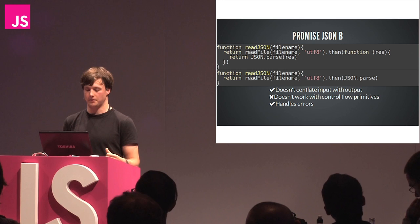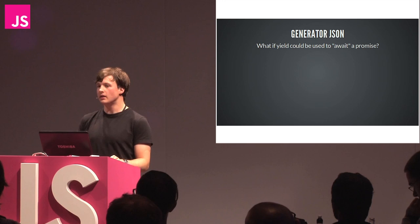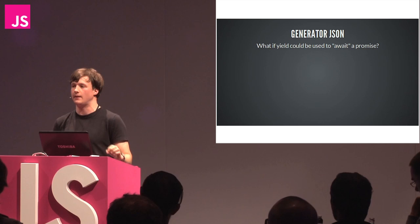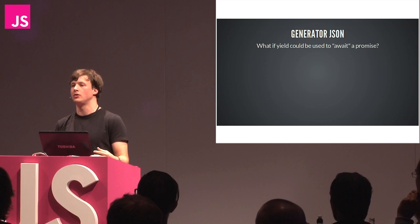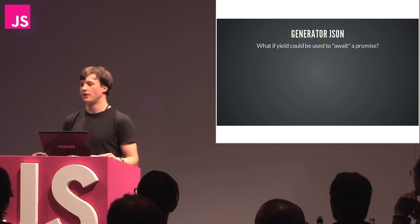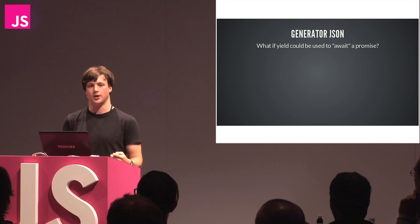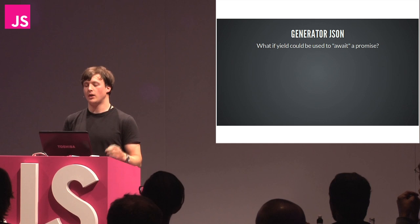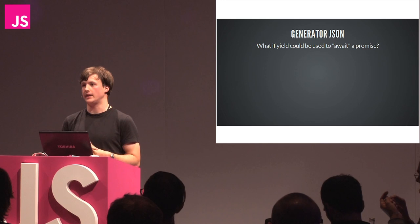This doesn't conflate input with output - we're returning a promise from all our functions. It handles errors really gracefully. We haven't added any extra code to handle those errors; they just bubble up the stack just like they would in synchronous code. But we can still do better. This is still a really simple example - it doesn't have any for loops, try/catch, or while. We want to be able to use those control flow structures to manage our code. What if we could await a promise somehow? What if we could pause a function mid-execution and wait for the promise to resolve?